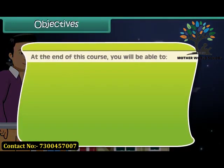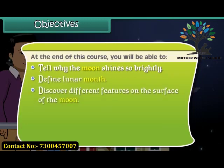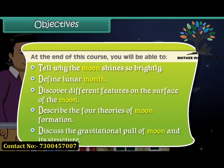Objectives: At the end of this course, you'll be able to tell why the moon shines so brightly, define lunar month, discover different features on the surface of the moon, describe the four theories of moon formation, and discuss the gravitational pull of the moon and its structure.